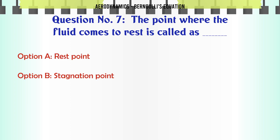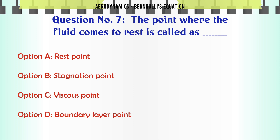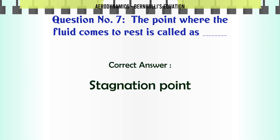The point where the fluid comes to rest is called: A. Rest point. B. Stagnation point. C. Viscous point. D. Boundary layer point. The correct answer is stagnation point.